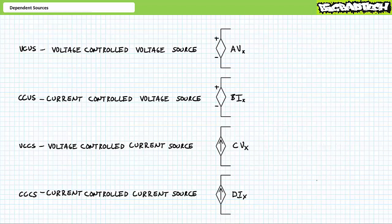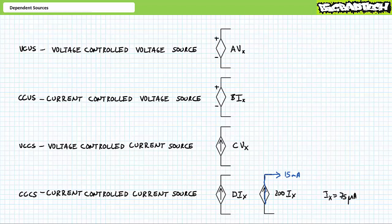And finally, four: current-controlled current sources, where output current is proportional to some dimensionless constant D times the controlling current value Ix. For example, consider a current-controlled current source where output current is 200 times Ix, and Ix happens to be 60 microamps. The output would be 200 times 60 microamps, or 12 milliamps. If the controlling current rose to 75 microamps, the output would be 200 times 75 microamps, or 15 milliamps.